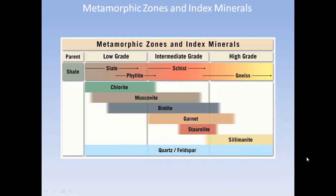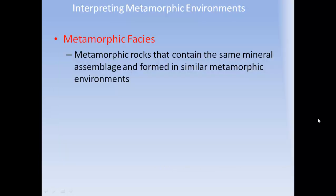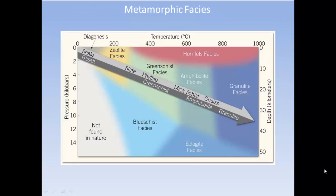Hornfels can occur at any metamorphic grade. Metamorphic facies are metamorphic rocks containing the same mineral assemblages formed in similar metamorphic environments, ranging from low to high temperature, low to great depth, and low to great pressure. Gneisses can form in the granulite and amphibolite facies, while slates are associated with the zeolite and greenschist facies.